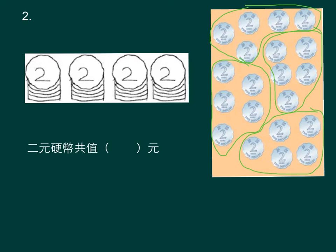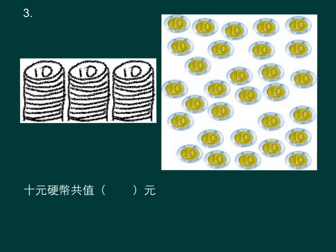共有二元硬币四搭，十个一数。所以这些二元硬币共值四十元。十元硬币，想想多少个一搭会较方便呢？